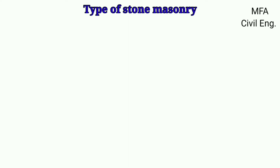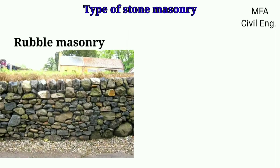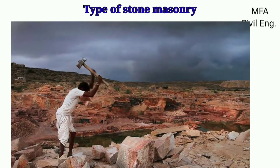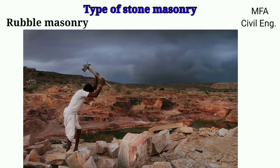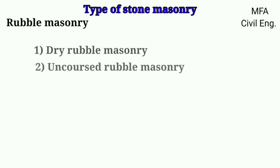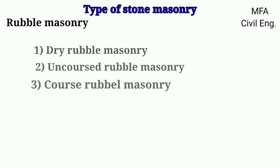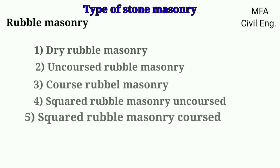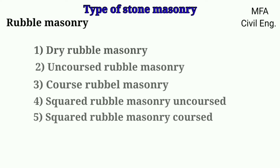The stone masonry are broadly classified into two categories: rubble masonry and ashlar masonry. Depending on the degree of dressing, the rubble masonry are further classified into various groups like dry rubble masonry, uncoursed rubble masonry, coarse rubble masonry, square rubble masonry, uncoursed and square rubble masonry, and coursed.